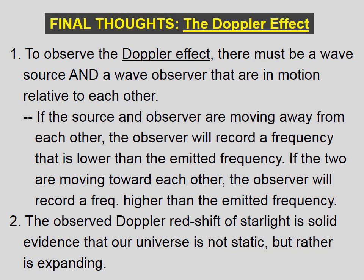To observe the Doppler effect, there must be a wave source and a wave observer that are in motion relative to each other. If the source and observer are moving away from each other, the observer will record a frequency lower than the emitted frequency. If the two are moving towards one another, the observer will record a frequency higher than the emitted frequency.